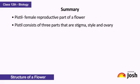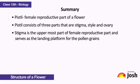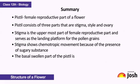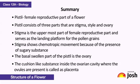Pistil consists of three parts: stigma, style, and ovary. Stigma is the uppermost part of the female reproductive part and serves as the landing platform for the pollen grains. Stigma shows chemotropic movement because of the presence of a sugary substance. The basal swollen part of the pistil is the ovary, and the cushion-like substance inside the ovarian cavity where the ovules are present is called placenta.